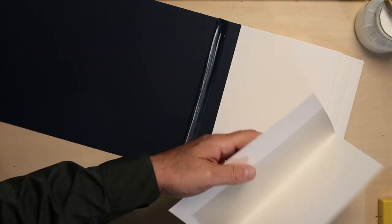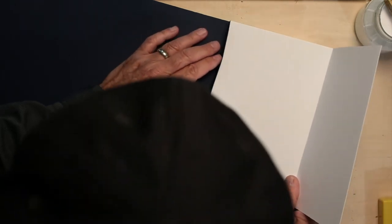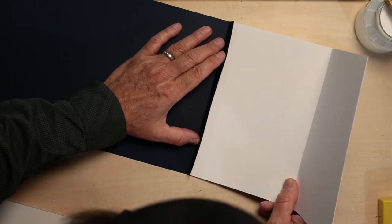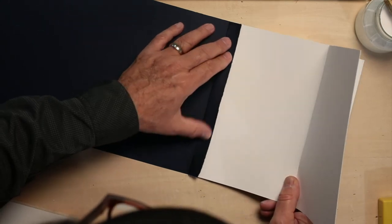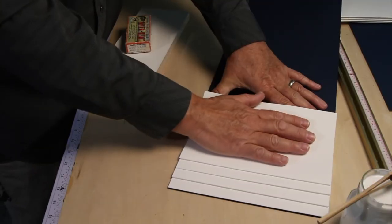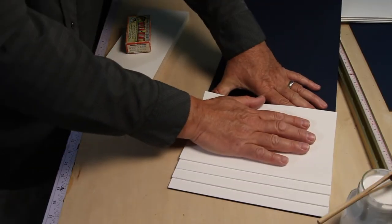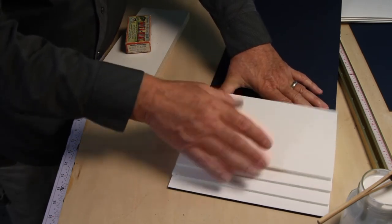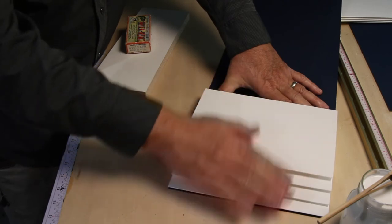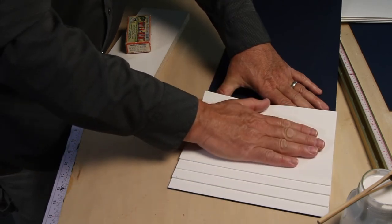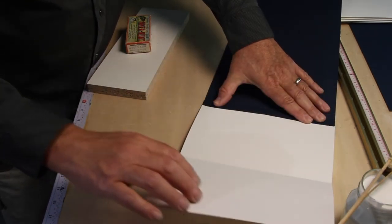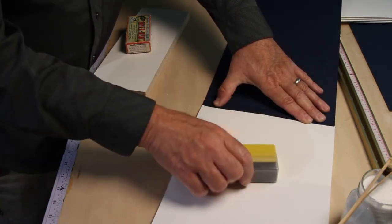I'll get this off, so that I can take this edge, align it in the crease. Now, of course, we have the luxury in that we're making a book out of blank sheets. If these were already printed, you'd have the added step to make sure that the sequence is correct.